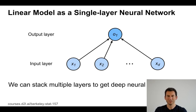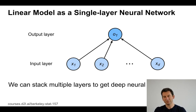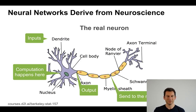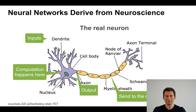A linear model can actually be viewed as a single-layer neural network. I have inputs x1, x2, up to xd, and I have some output. If I want to get a deep network, I can go and stack them, but for now let's just stick with this single layer. This is actually the granddaddy of all neural networks — namely, a single neuron.